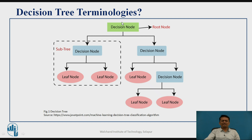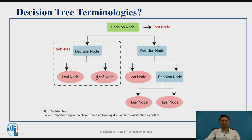Let us visualize this. The root node receives all input features. There is then a splitting process where the node is divided, forming a sub-tree with another decision node. The end nodes represent leaf nodes, which have no further split. This is the visualization of the classification approach in a decision tree: root node, intermediate decision nodes, ending with leaf nodes.